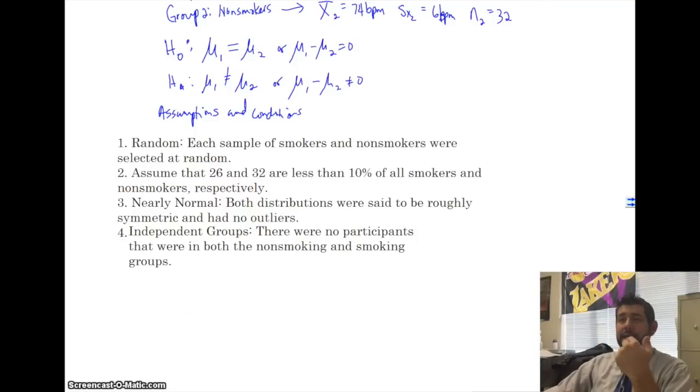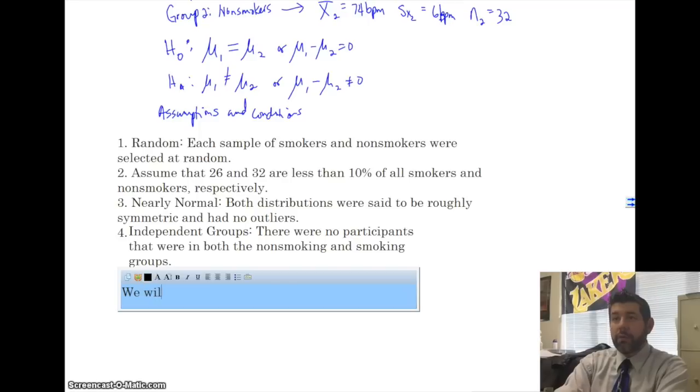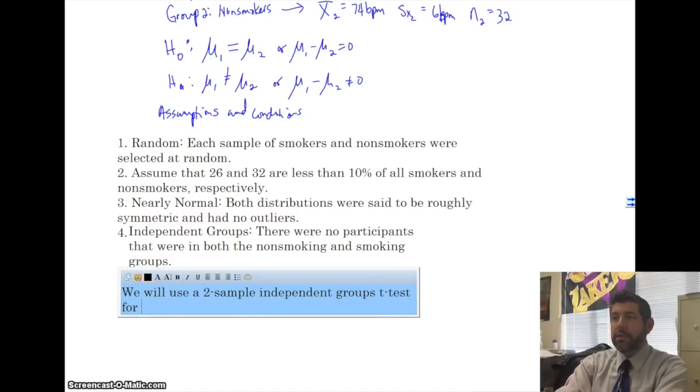Before we do that, we want to make sure that we explain which test we are going to use. So, we're going to say, we will use a two-sample independent groups t-test for means. So we're explaining what we're doing. Let's go ahead and go into the mechanics of the whole thing.